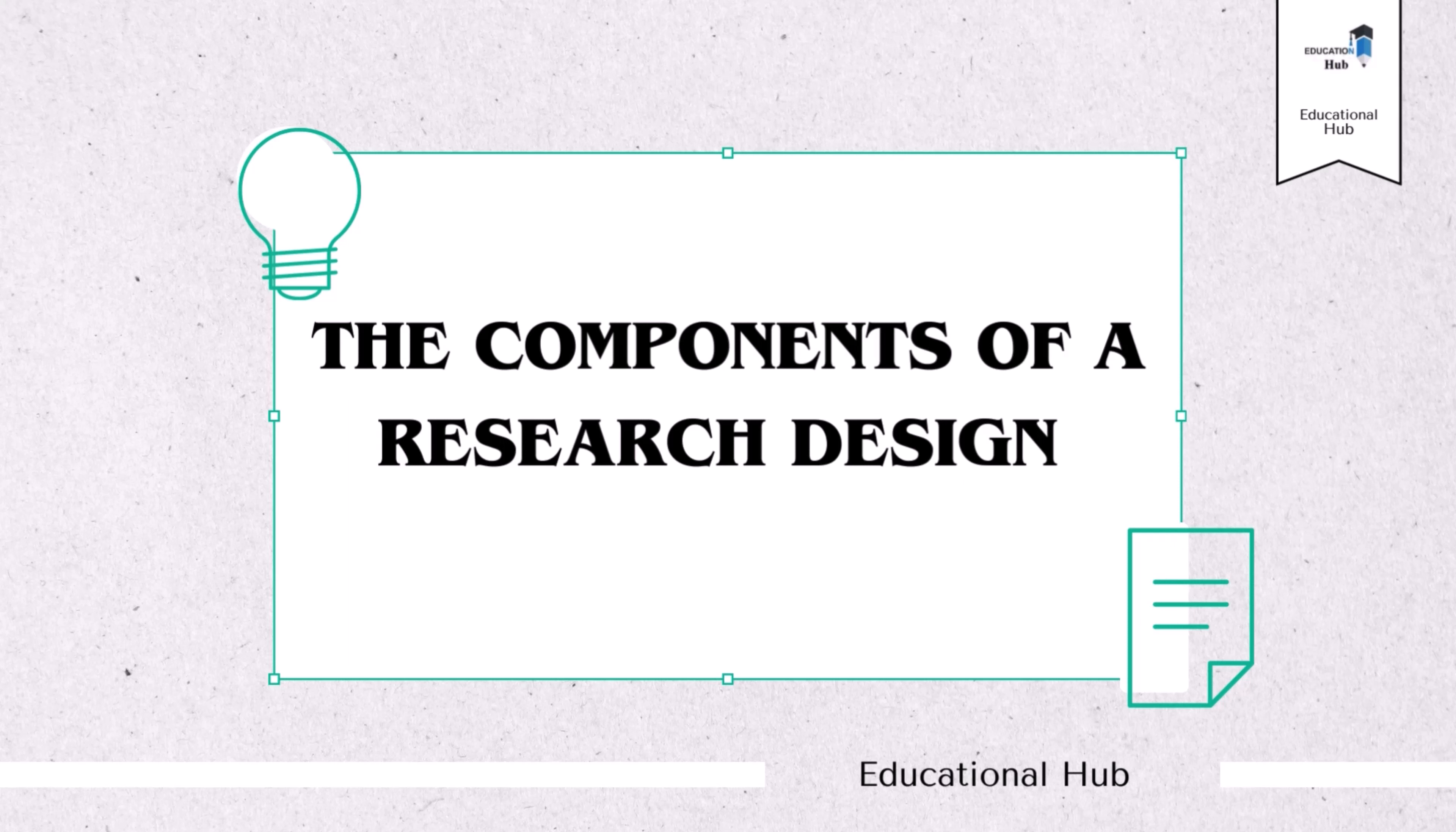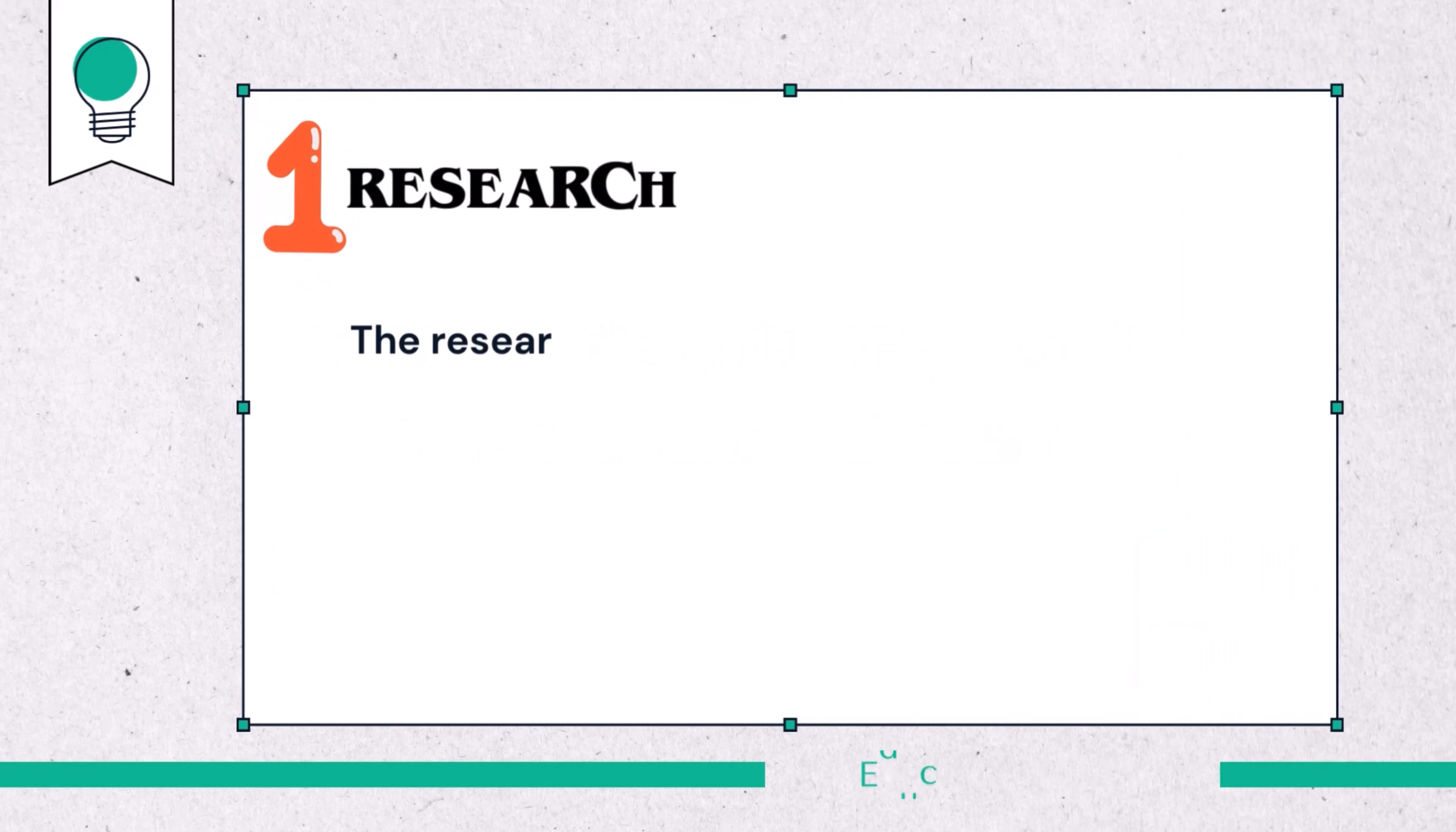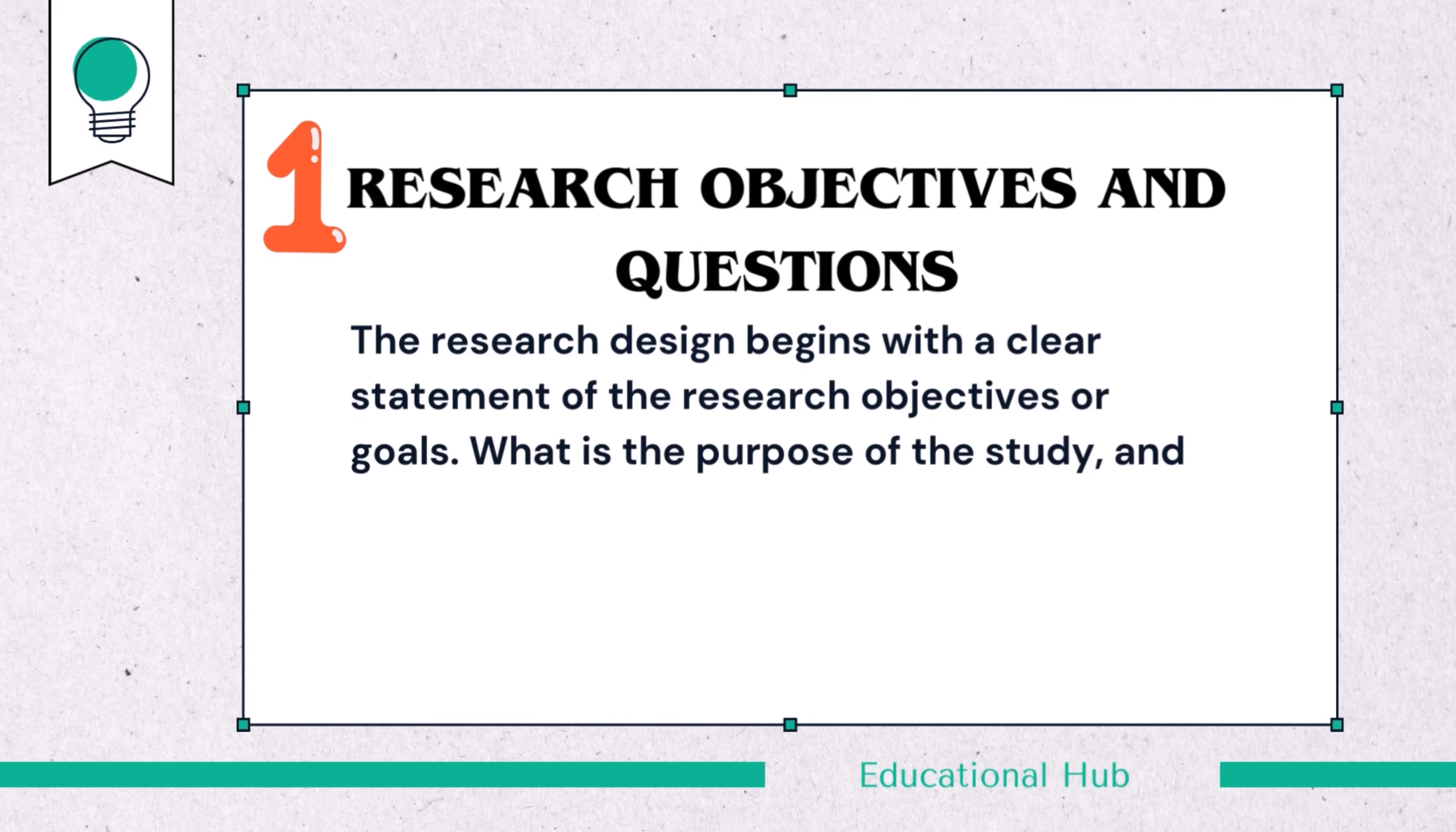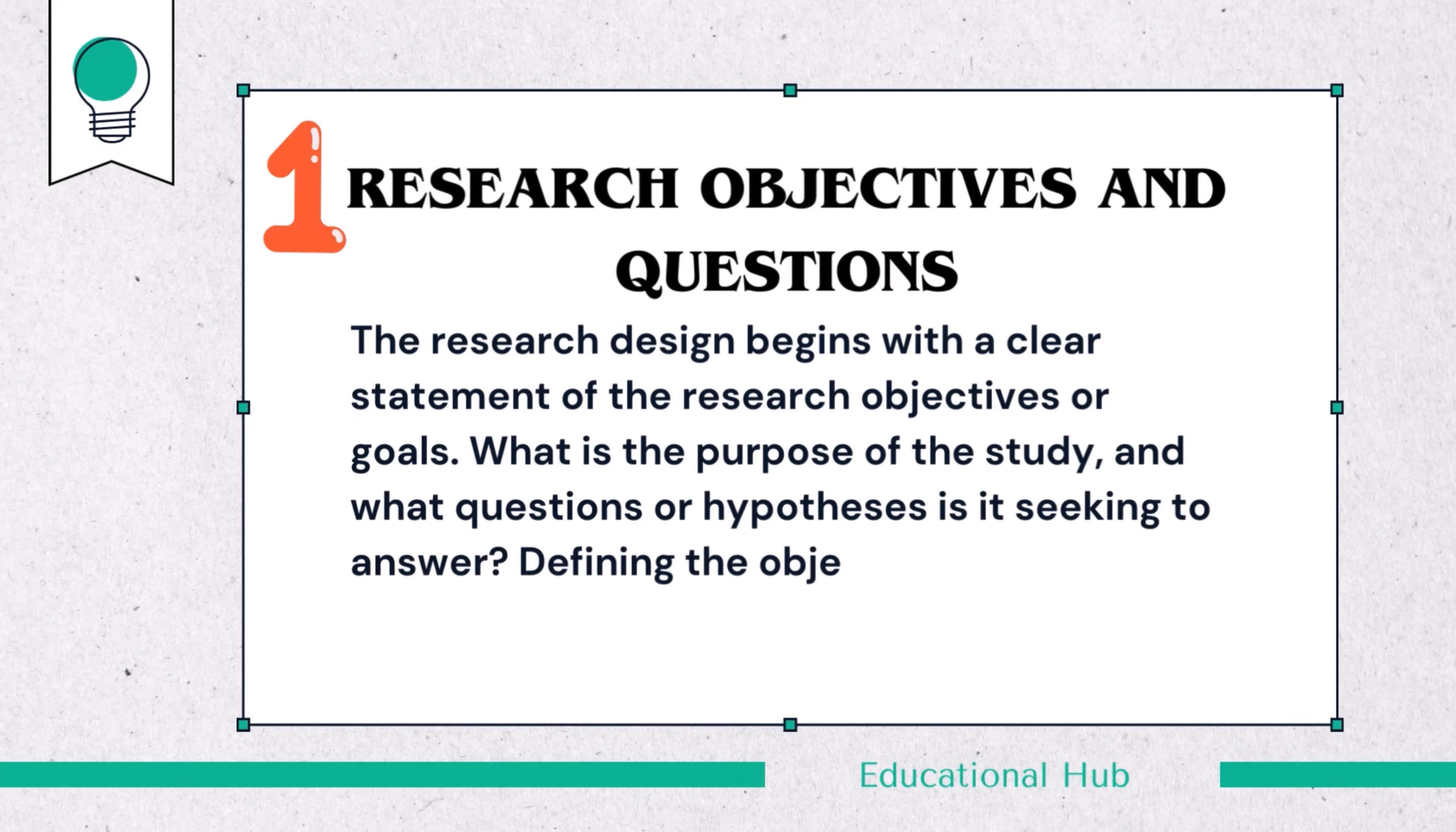The components of a research design typically include the following elements. 1. Research objectives and questions. The research design begins with a clear statement of the research objectives or goals. What is the purpose of the study? And what questions or hypotheses is it seeking to answer? Defining the objectives is a fundamental step in research design.